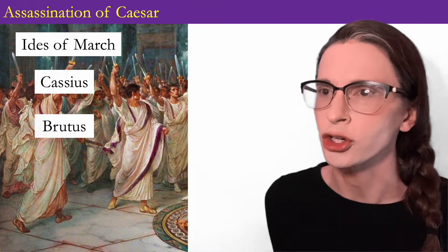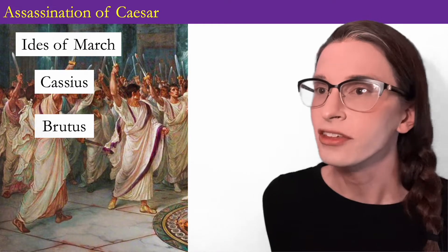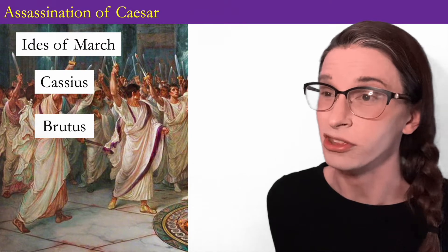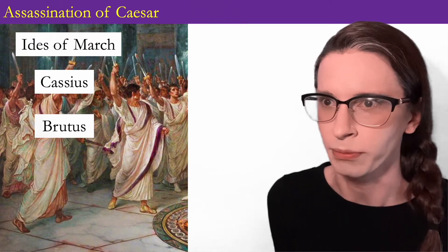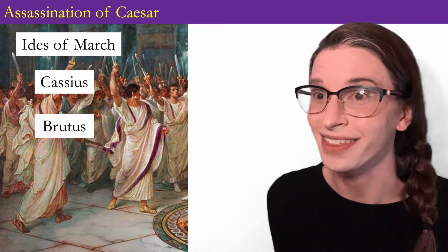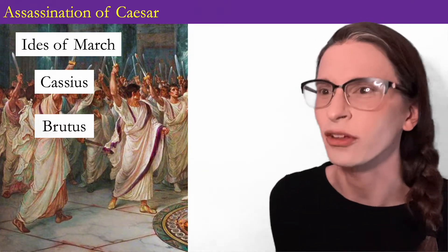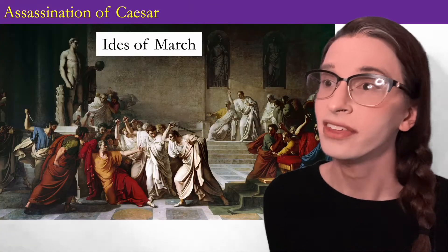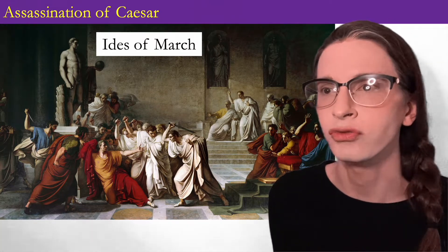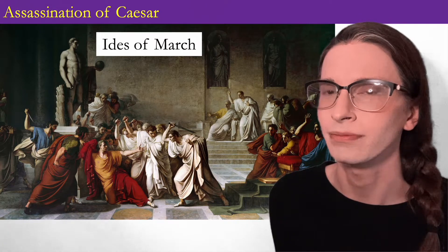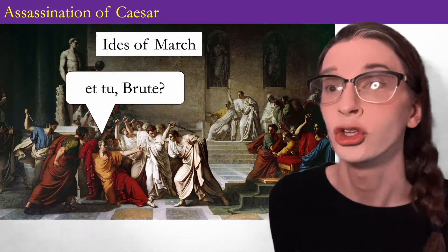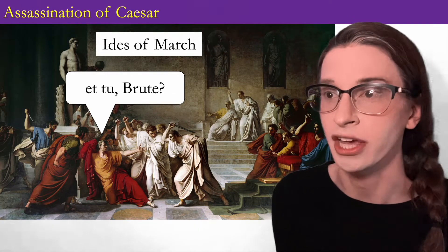So on the Ides of March, 44 BCE, Caesar enters the Theater of Pompey, which is the Senate's temporary meeting place while the new Senate house is being constructed. There are tales of bad omens and bad dreams sent to both Caesar and his wife Calpurnia, though no matter what day the assassination had happened, we could have found some bad omens to point to. There, Caesar is stabbed 23 times at the foot of the giant statue of Pompey, his former ally and adversary — see? Literary. His famous last words, "et tu Brute" — or "you too, Brutus" — were totally made up by Shakespeare. They are not historical.